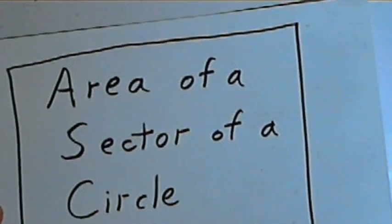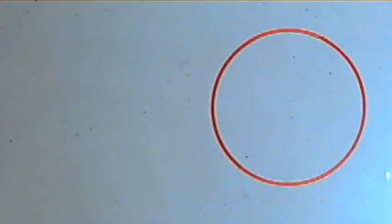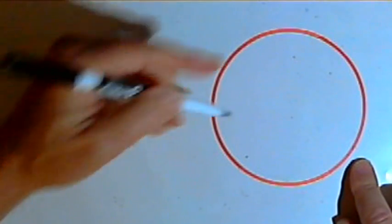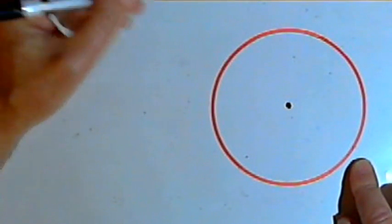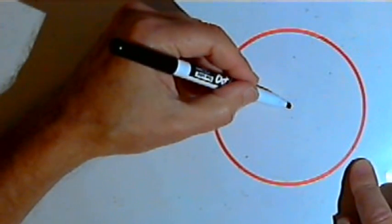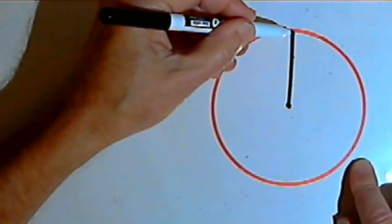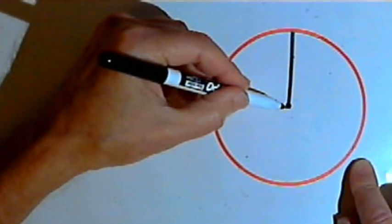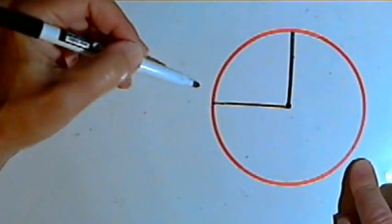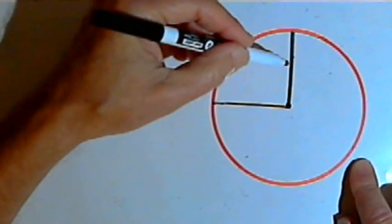So let's make sure we understand what a sector is. I've drawn a circle over here, and if I mark the center with a dot, and then I draw a line from the center to the edge of the circle, and another line from the center to the edge of the circle, each of those lines will be a radius.